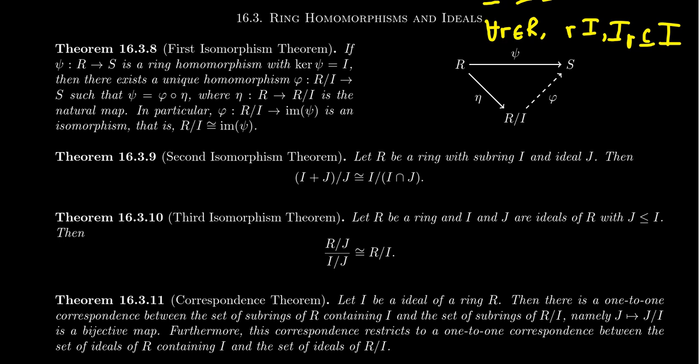The proof of the first isomorphism theorem for rings is essentially the same proof as it was for groups — take a look at the attached video if you want to see that proof again. All of the appropriate parts just change over from rings to groups. It comes down to how these functions are constructed: what does the natural map do, and how can you build the map phi? Since the quotient structure of the ring is well defined, everything works out perfectly.